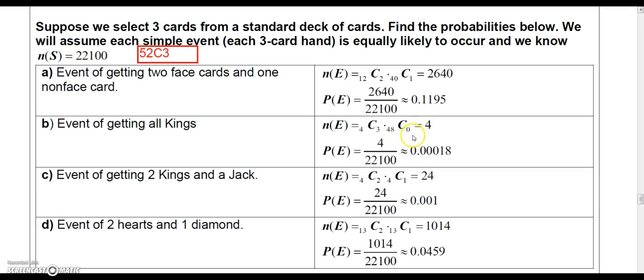So that's actually going to be four out of 22,100. So that probability is 0.00018.